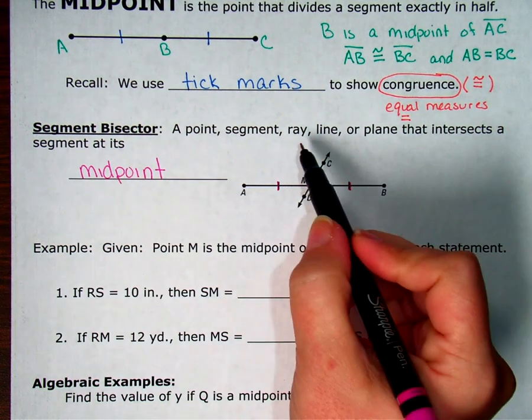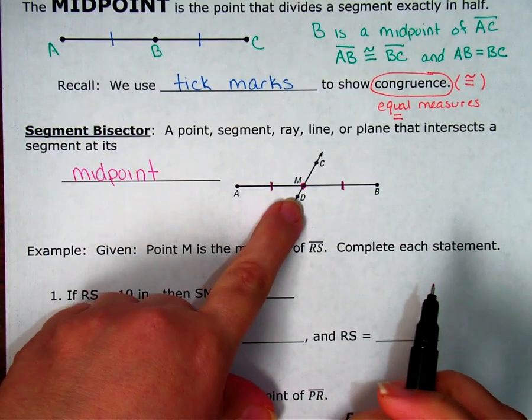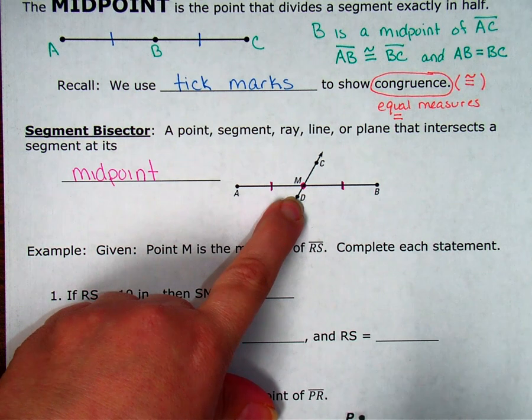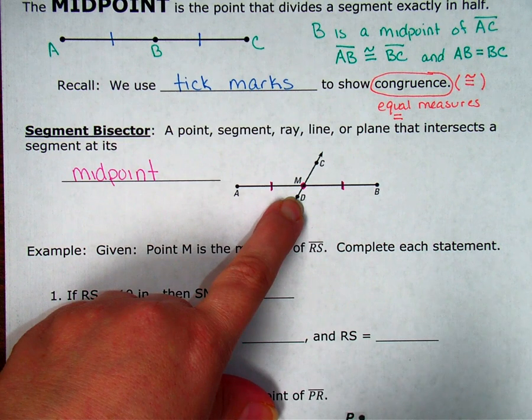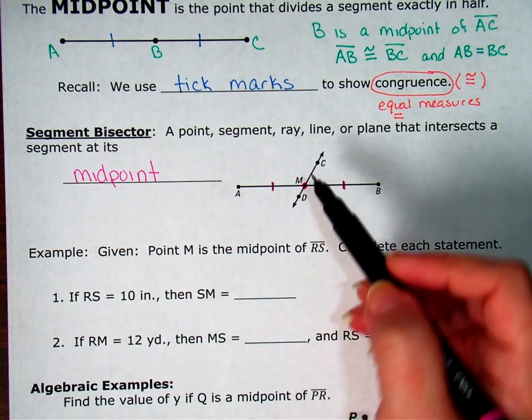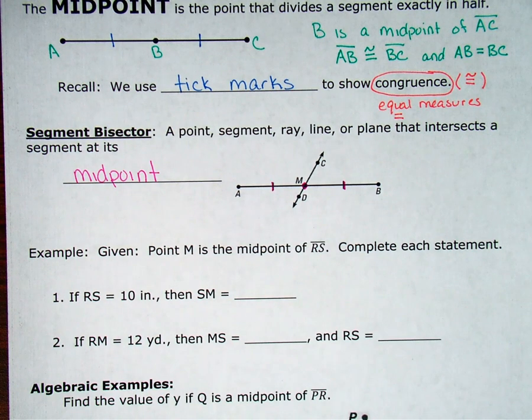I could also use a ray or a line or even a plane. So if I were to cut off one arrow, now I have ray DC is a segment bisector of segment AB. I could leave it just like it is, and I could say line DC is a segment bisector of segment AB. So anything that cuts that segment in half is a segment bisector.